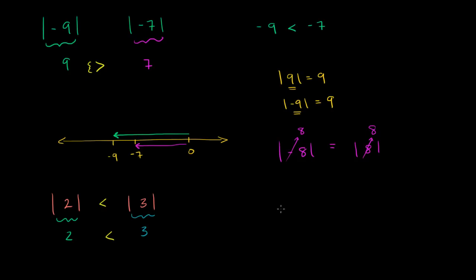Let's compare the absolute value of negative 1 to positive 2. The absolute value of negative 1 is just the positive version of 1, which is 1. So 1 is clearly less than 2 — the absolute value of negative 1 is clearly less than 2.